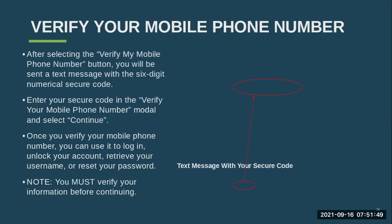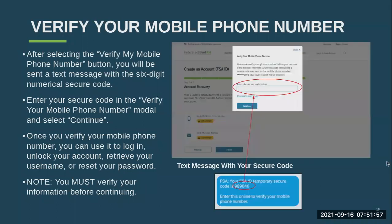To verify your mobile phone number, you will be sent a six-digit text message with a numerical code. You will enter that code in the box and then select continue. Once that phone number is verified, you can use it to log in, unlock your account, retrieve your username, or reset your password. It's really important to know that you cannot continue doing your FAFSA until you have verified your information, so just get it done now.